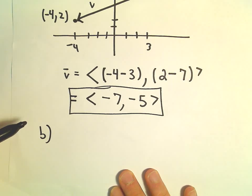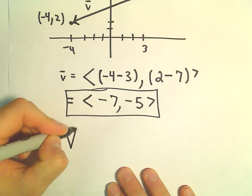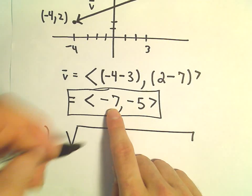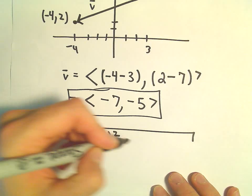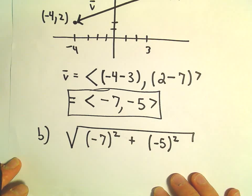Part B, we wanted to know the length. Well, to get the length, all we do is we just take the square root. We take each component and we square it. We take -7 squared, we take -5 squared, and then we add those together.